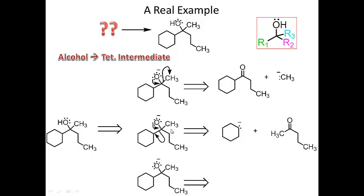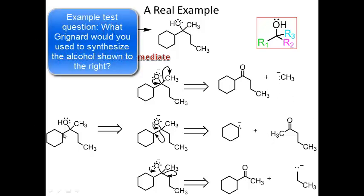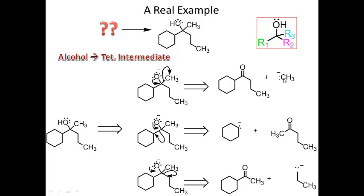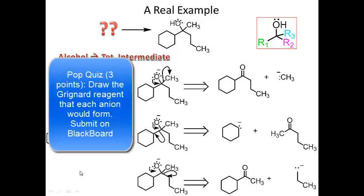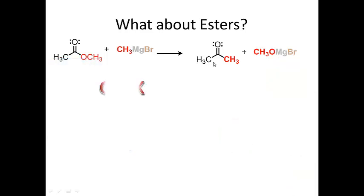If I eliminate the propyl group, I reform the pi bond, kick off the propyl anion with a pair of electrons, and get the ketone with the cyclohexane ring and CH3 still attached. All three of these answers are correct. If asked on an exam for the starting materials of this tertiary alcohol, any of the three would be accepted. As a pop quiz, figure out what Grignard reagent corresponds to each of these three elimination pathways.